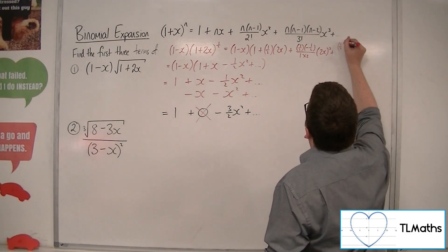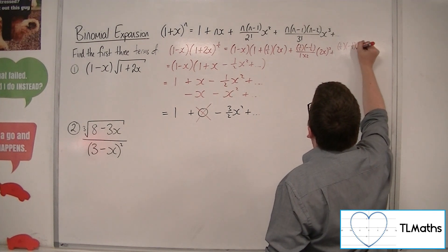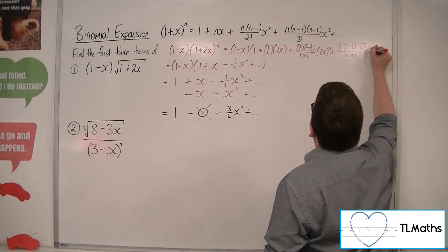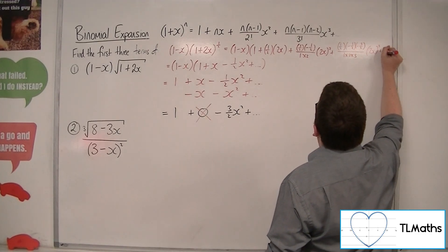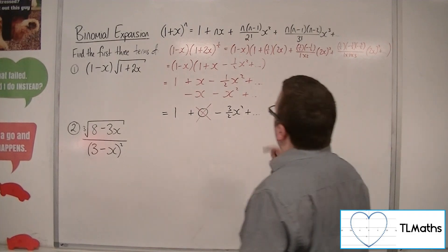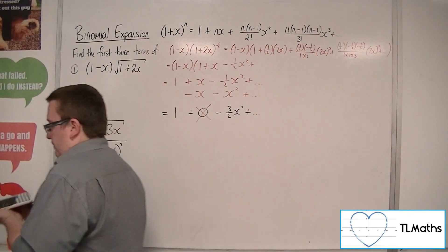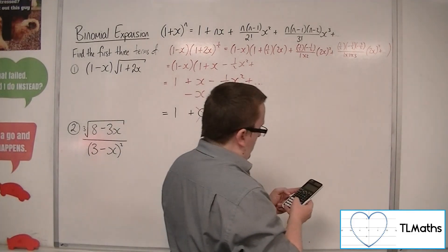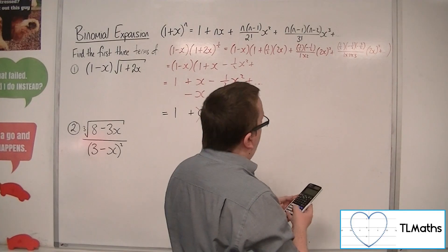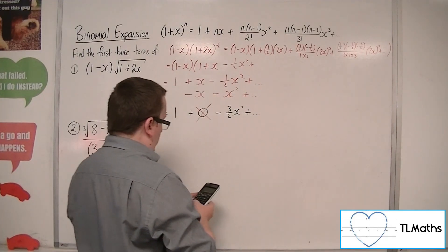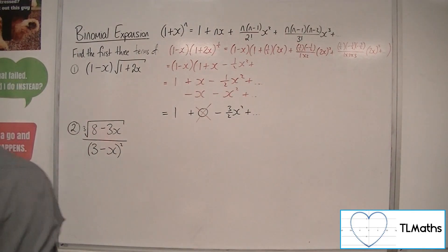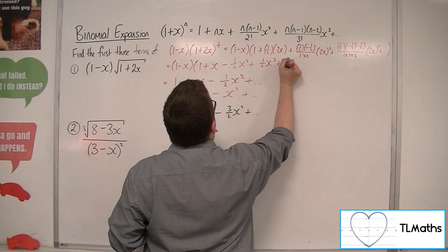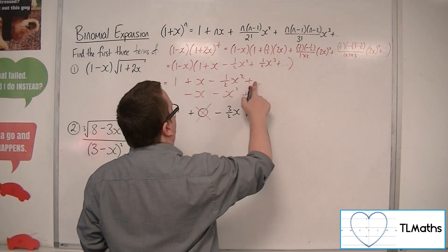I need the next term. So I've got one-half times minus one-half times minus three-halves, over 1 times 2 times 3, times (2x)³, plus other stuff. Simplifying: 3 over 8 divided by 6 is 1/16, then times 8 gives one-half. So we get one-half x cubed, plus other terms.